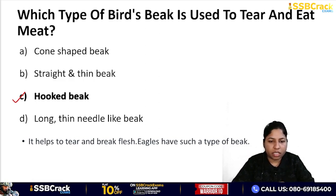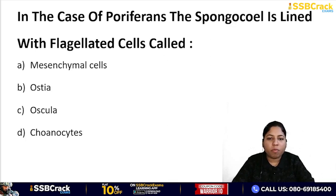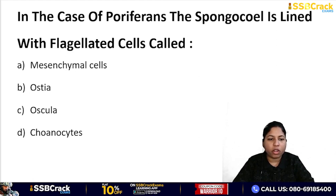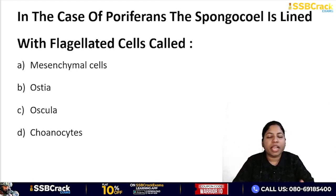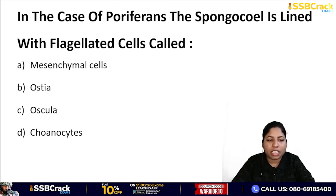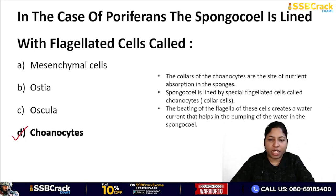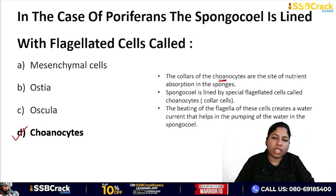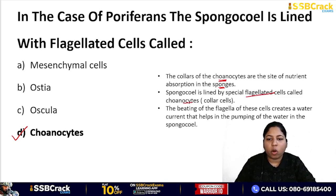Next question: in the case of Porifera, the spongocoel is lined with flagellated cells. What are these cells called? Options: mesenchymal cells, ostia, oscula, or choanocytes. The correct answer is choanocytes (also called collar cells). Choanocytes are the site of nutrient absorption in sponges, and they line the spongocoel with their flagella.